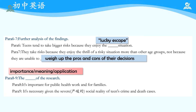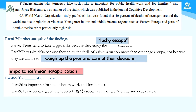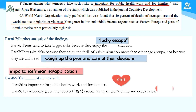Paragraph 8 and 9讲的是这项研究的importance和application。Paragraph 8谈到the importance for public health work and for families；paragraph 9谈到the necessity given the serious social reality of teens' crime and death cases。这两段都是在探索这项研究的价值，说明为什么青少年犯罪研究是必要的。